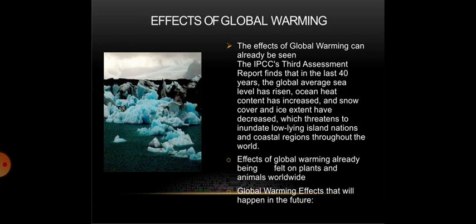There are some effects of global warming. The effects of global warming can already be seen. The IPCC's third assessment report finds that in the last 40 years, the global average sea level has risen, ocean heat content has increased, and snow cover and ice extent have decreased, which threatens to inundate low-lying island nations and coastal regions throughout the world.